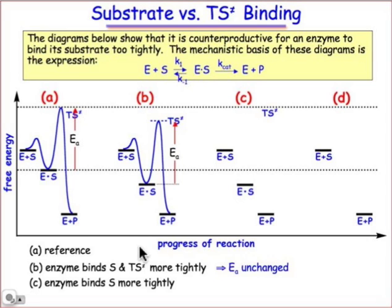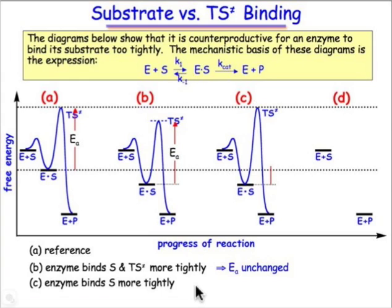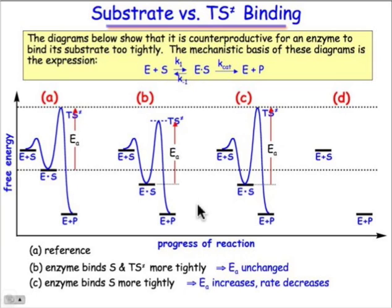In case C, what we've done is only selectively bind the substrate more tightly than the reference point. We've left the transition state energy at the reference point value. In this case, we can see that E sub A actually increases relative to the reference point — the rate of the reaction is going to decrease.